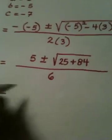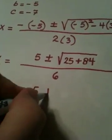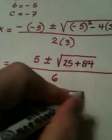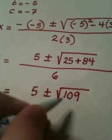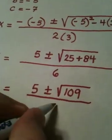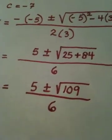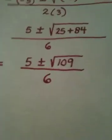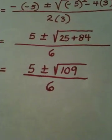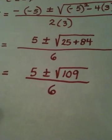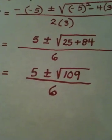So, I have x equals 5 plus or minus the square root of 109 all over 6. And, at this point, what I try to do is, I try to see if 109 can be broken up. You know, if we can pull it into, if we can take out a perfect square.